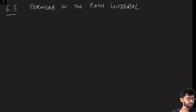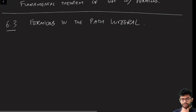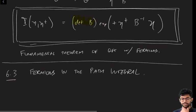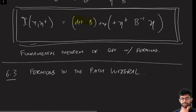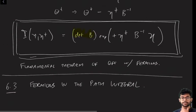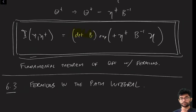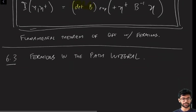Now that we have this identity — and I remind you the identity is this one right here — we can use this to do path integrals over fermions. So let's understand how to do that.